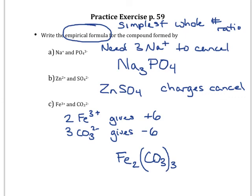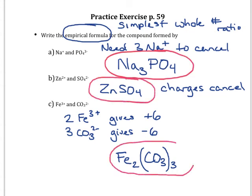So again, let's circle the final answers here. And when you do your homework problems, make sure you are also explaining how you got to your correct answers, so how many of each ion you had to have in order to make the charges cancel.